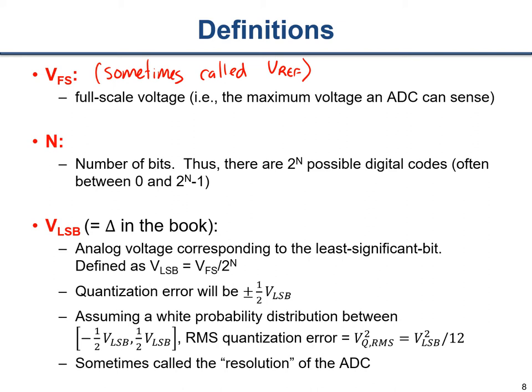Depending on how the ADC is set up, there may also be a lower limit - it might be ground, or it might be above ground depending on the architecture. The next definition is capital N, the number of bits in the ADC. If there are N bits, then there are 2^N possible digital values at the output. We typically zero-reference these values, so they vary between 0 and 2^N minus 1.